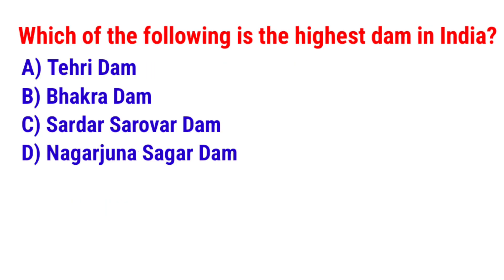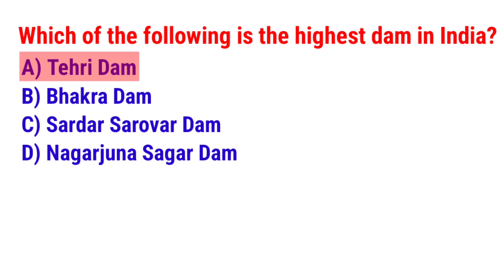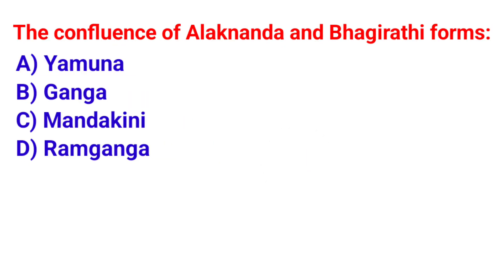Which of the following is the highest dam in India? The answer is option A, Tehri Dam. The confluence of Alakananda and Bhagirathi forms?